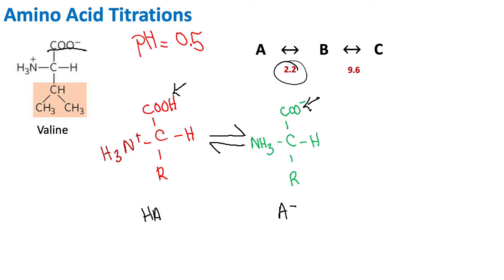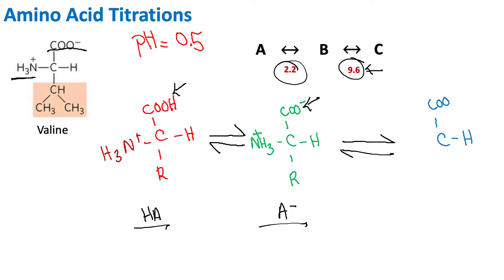The protonated form is our acid and this non-protonated form is our conjugate base. But I still have the extra hydrogen on the amino group. Let's say I continue to increase my pH and I surpass 9.6 — I've surpassed the dissociative ability of the amino group. So once I surpass the pH of 9.6, this extra proton will deprotonate. Now I will have COO minus and NH2. If we label these: this is Form A, this is Form B, and this is Form C.